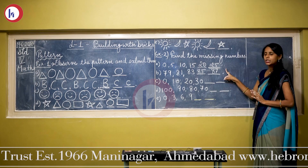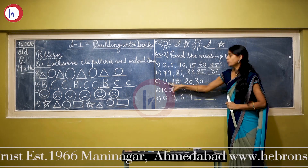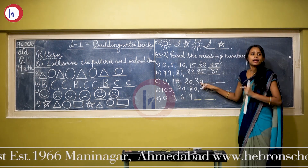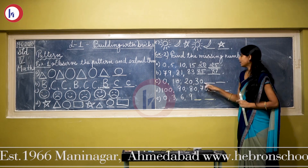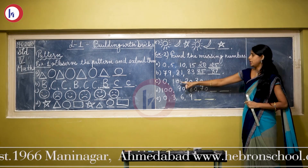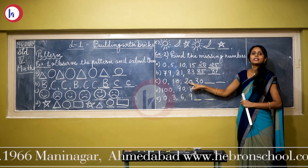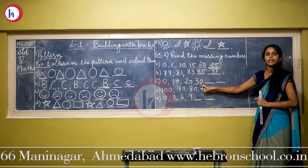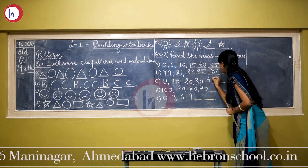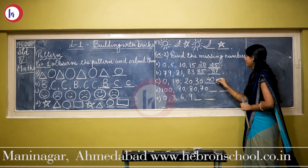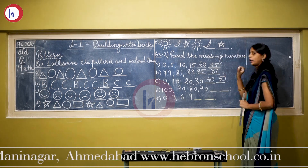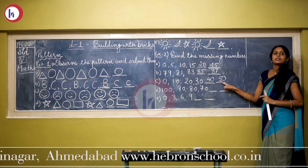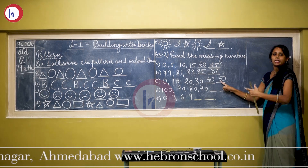Now come to the next: 0, 10, 20, 30. We get these numbers by skip counting by 10. We can continue this series by adding 10: 0 plus 10 is 10, 10 plus 10 is 20, 20 plus 10 is 30. Again add 10 to 30: 40. Then 40 plus 10 is 50. We can continue: 50 plus 10 equals 60, and 60 plus 10 equals 70.